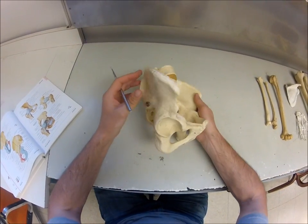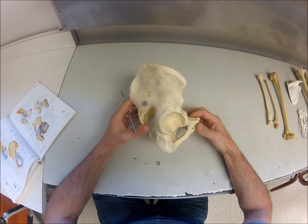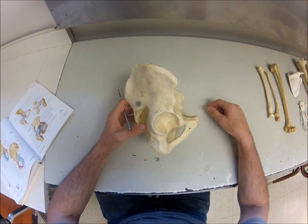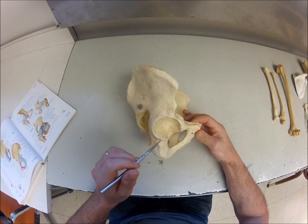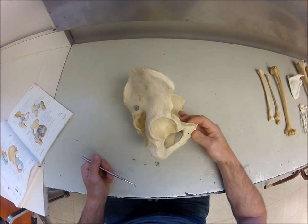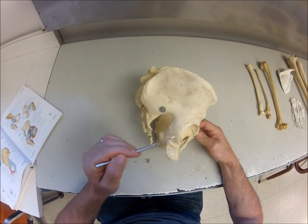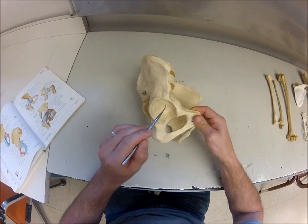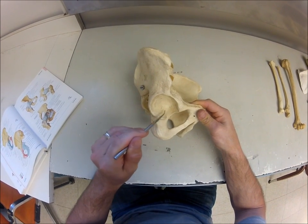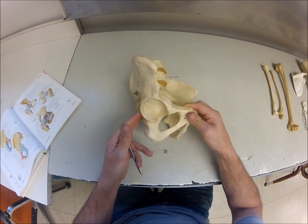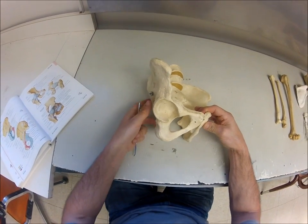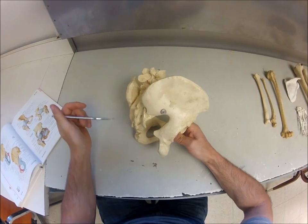Looking down at the lower extremity osteology, we start with the coxal bones. Each half of the coxal bone is actually made up of three separate bones. Starting at the hip socket, which is called the acetabulum — that's where all three bones come together. The most superior and largest is the ilium, making up most of the top of the socket. The most inferior is the ischium, making up most of the inferior part. The more medial bone is the pubis, making up the medial aspect.